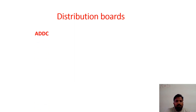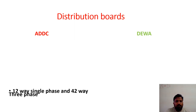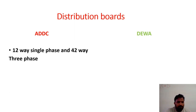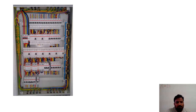The major differences between ADDC and DEWA are in the distribution boards. For both ADDC and DEWA, a single phase distribution board is 12-way and a three phase distribution board is 42-way. However, the construction differs. For DEWA distribution boards, after the incomer you have ELCBs, and each ELCB feeds 6 to 9 MCBs in separate sections.